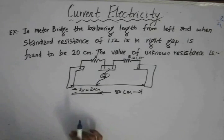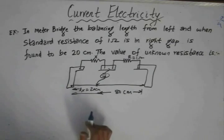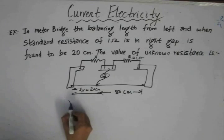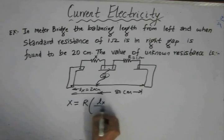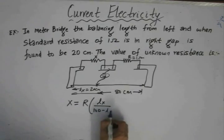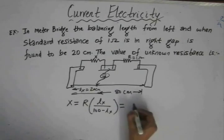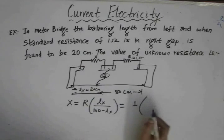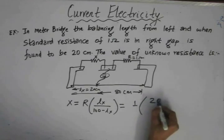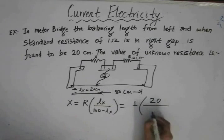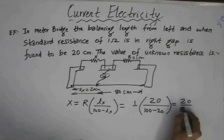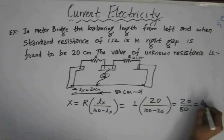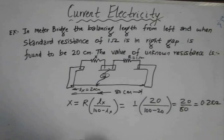Since the bridge is balanced at this point, we can write the expression: x equals R times Lx divided by (100 minus Lx). The value of R, the standard resistance, is one ohm. The balancing length Lx is 20 centimeters. So x equals 1 times 20 divided by (100 minus 20), which gives us 1 by 4, that is 0.25 ohms. This is the value of the unknown resistance.